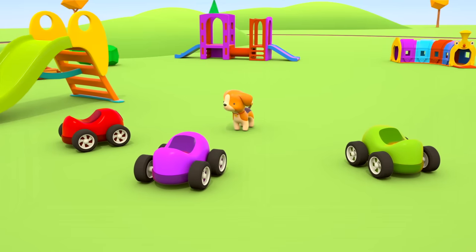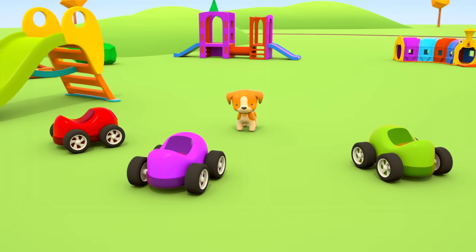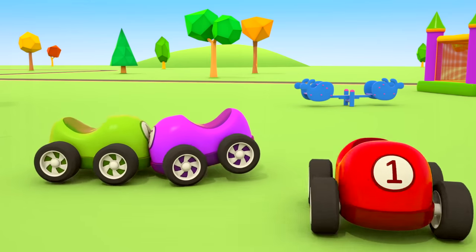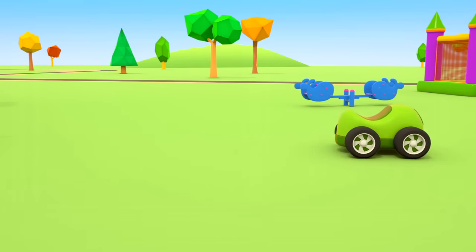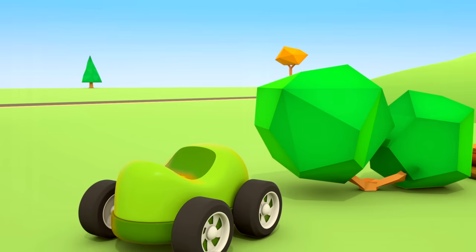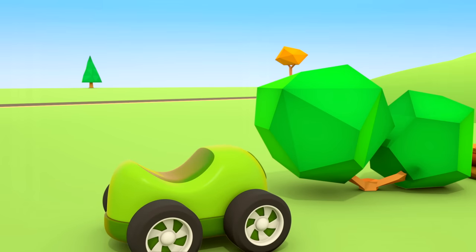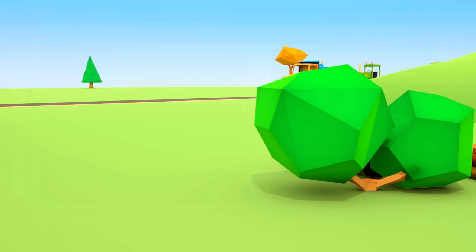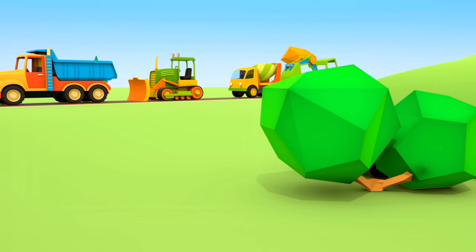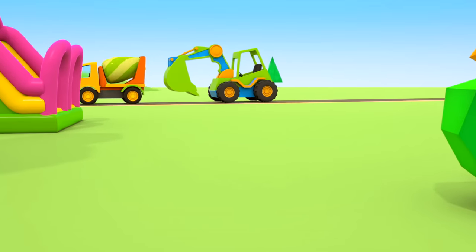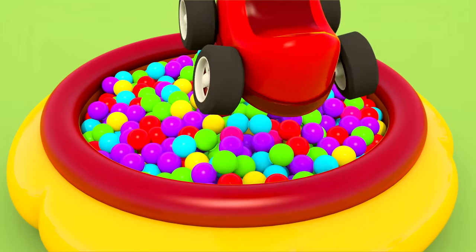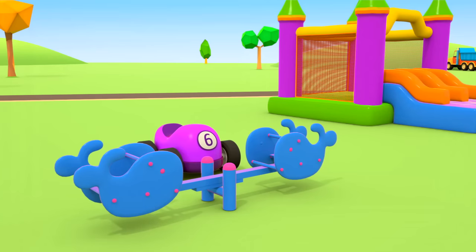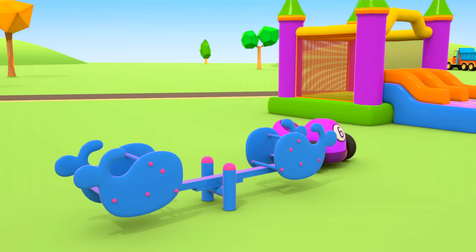The little cars are playing hide and seek with the puppy. The puppy's closed his eyes and is counting. The cars are off to hide. The green car jumps behind a bush. The red car has dived into the ball pit. But the purple car can't find anywhere to hide at all.